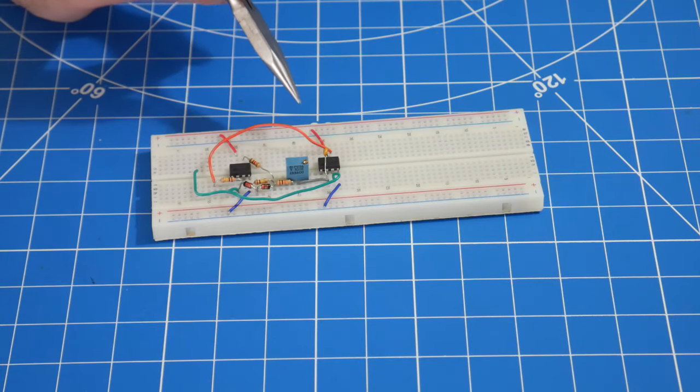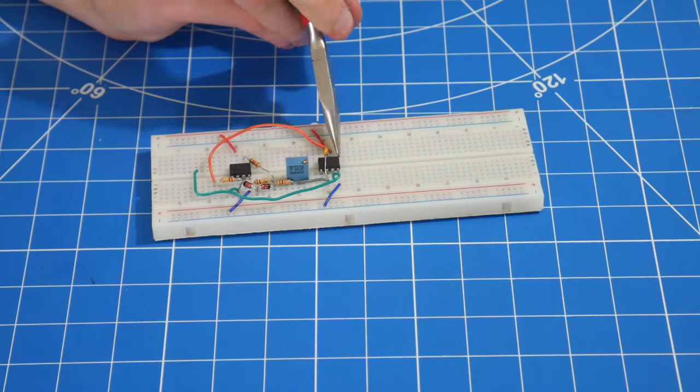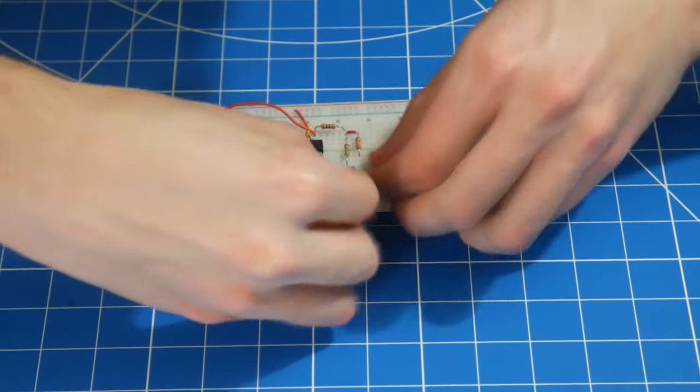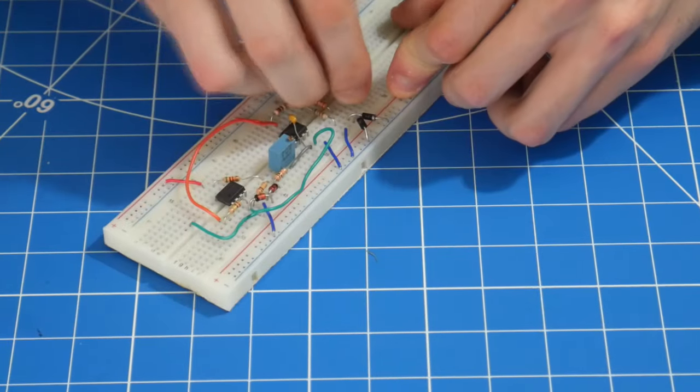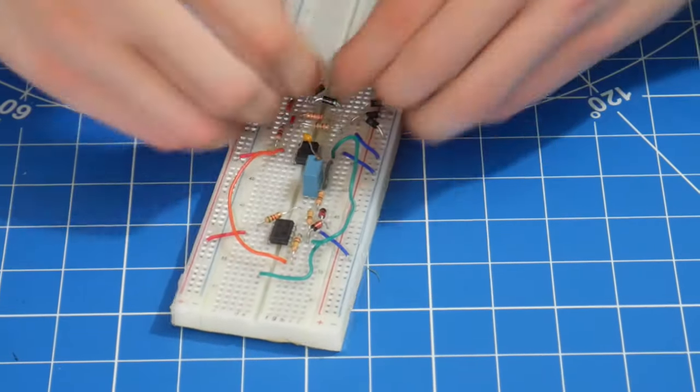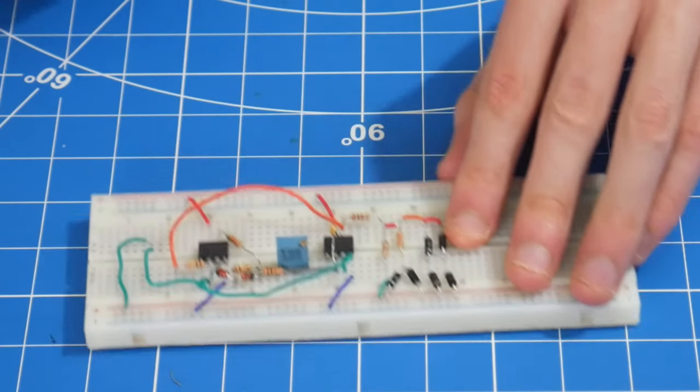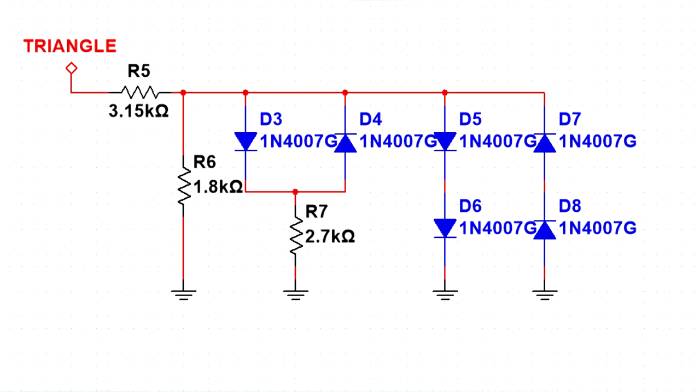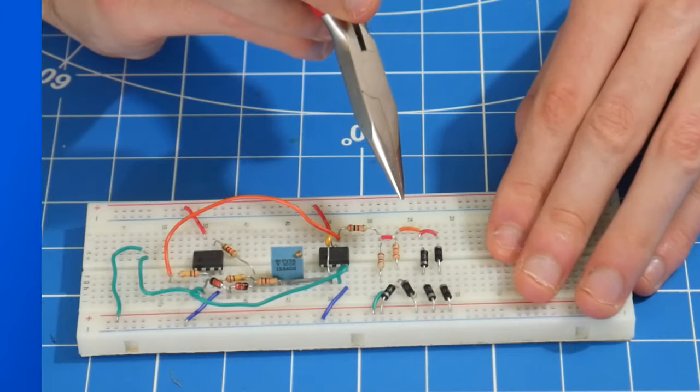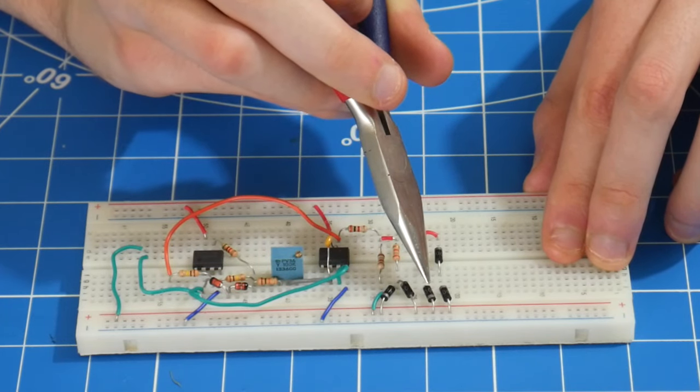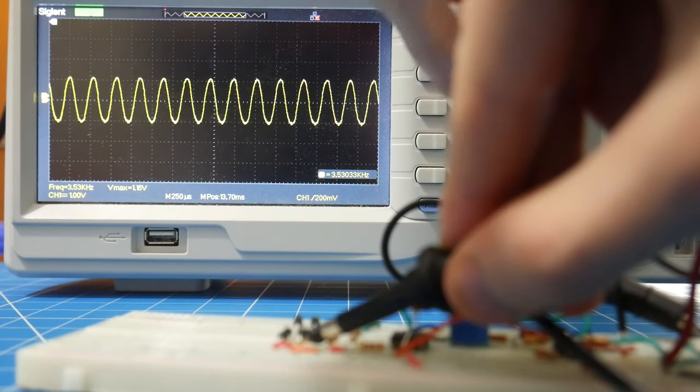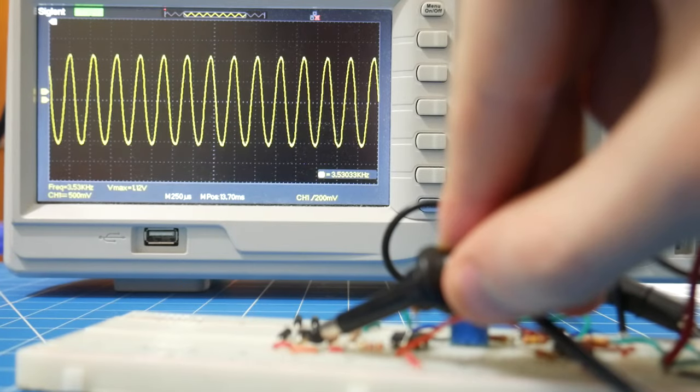But, we can take this circuit a step further and turn the output triangle wave into a sine wave. So, to turn a triangle wave into a sine wave, we take our output and we feed it into this thing called a wave shaper. Now, these are kind of touchy and hard to get right. Basically, how it works is it takes advantage of the known voltage drop across these silicon diodes, which is 0.7 volts. So, we kind of use this as scissors to cut down the triangle wave into a sine wave.